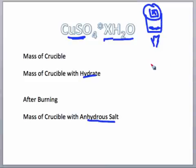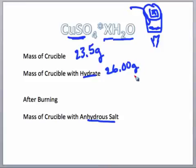So to find those values, I'm going to use some values that I used in the lab, and the first thing I need is the mass of the empty crucible. When I weighed the mass of my empty crucible, it was 23.5 grams. After I put the hydrate in the crucible and then weighed it, it was 26.0 grams.